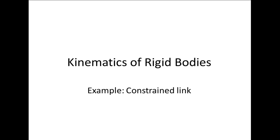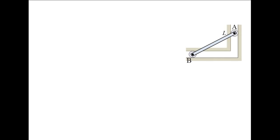In this example, we will examine a rigid body problem involving a link whose ends are constrained to move in guides. A slender, uniform link whose length L is 0.2 meters has rollers attached to each end. The rollers are constrained to move in guides. Roller A moves downward with a constant speed of 2 meters per second. When the bar is in the position where theta is 30 degrees, what is the angular velocity omega and the angular acceleration alpha of the link? What is the velocity and acceleration of roller B? What is the velocity and acceleration of the center of mass?